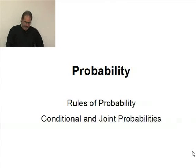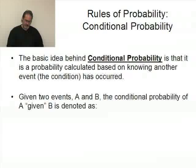Continuing our discussion about probabilities, let's take a look at the idea of conditional and joint probabilities. The basic idea of conditional probability is that a probability is calculated based on knowing another event, the other event being the condition, has in fact occurred.